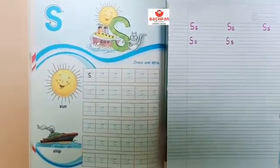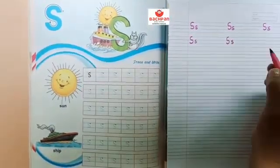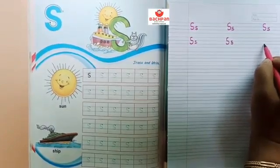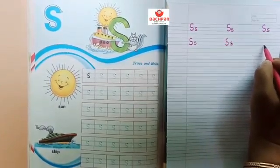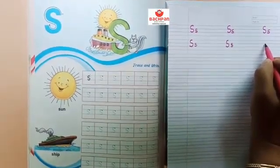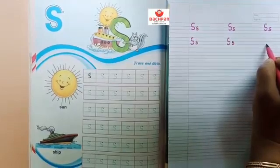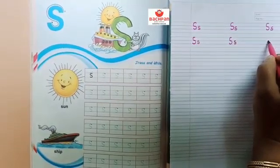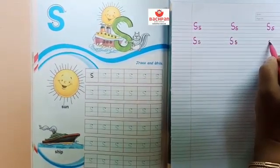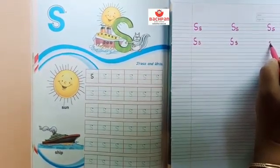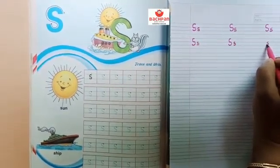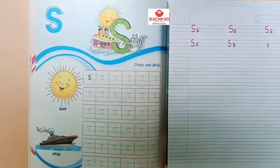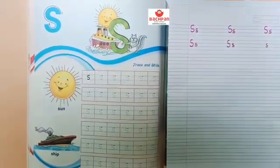For small s you have to use two middle lines. We always use middle lines for small s. We have to make a left hand curve, after that the right hand curve. This is small s. S for sun. S for ship.